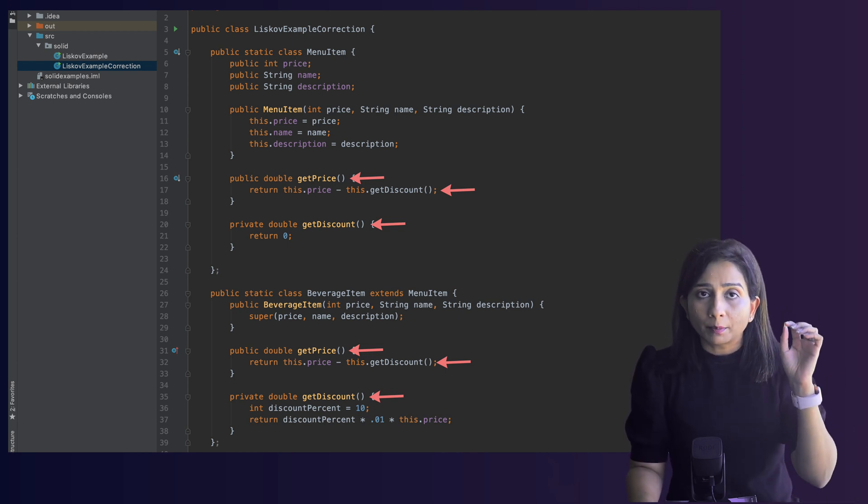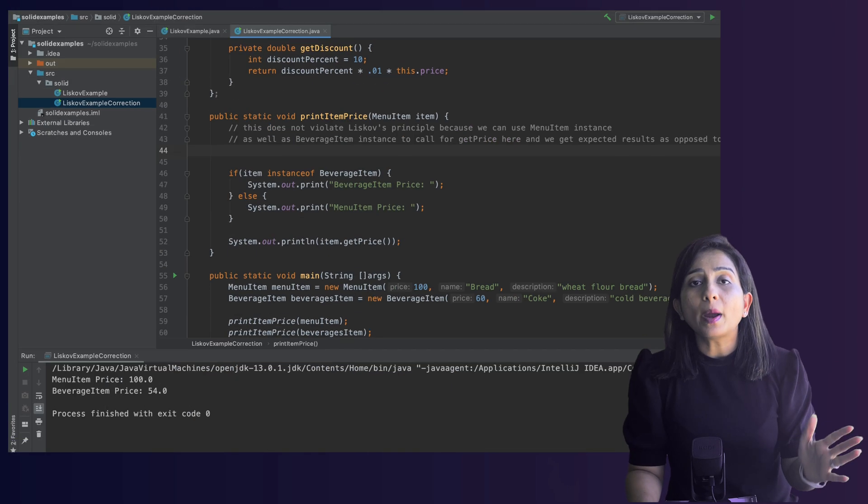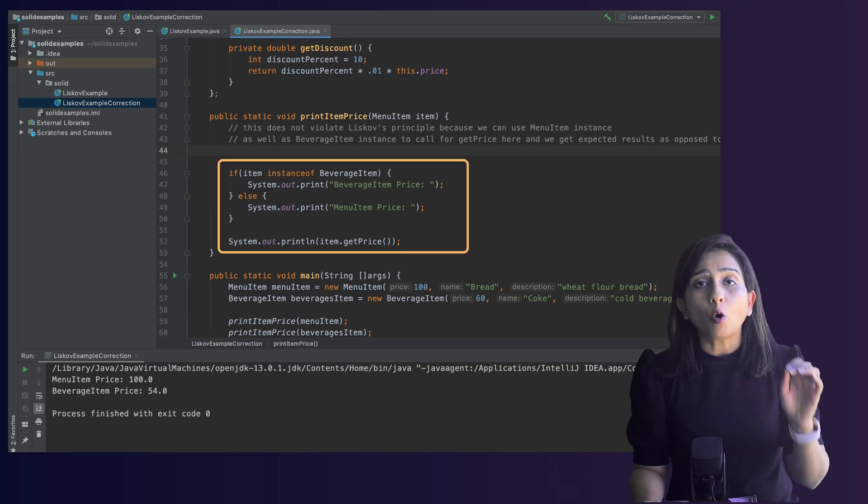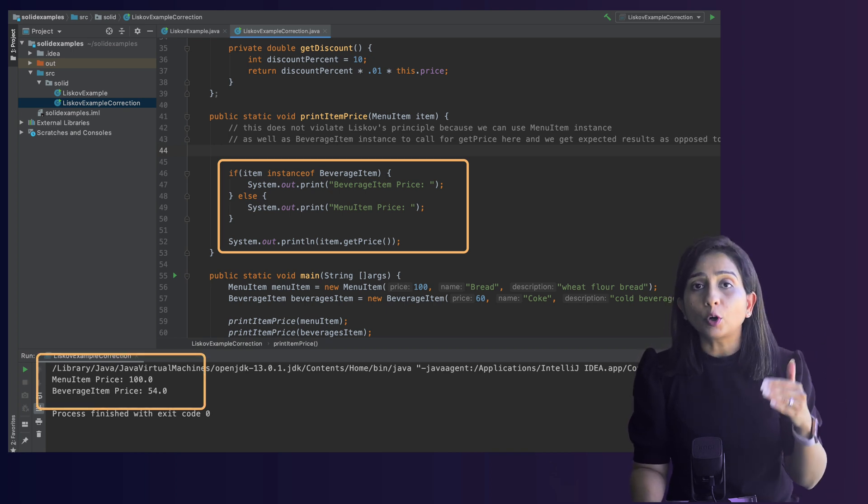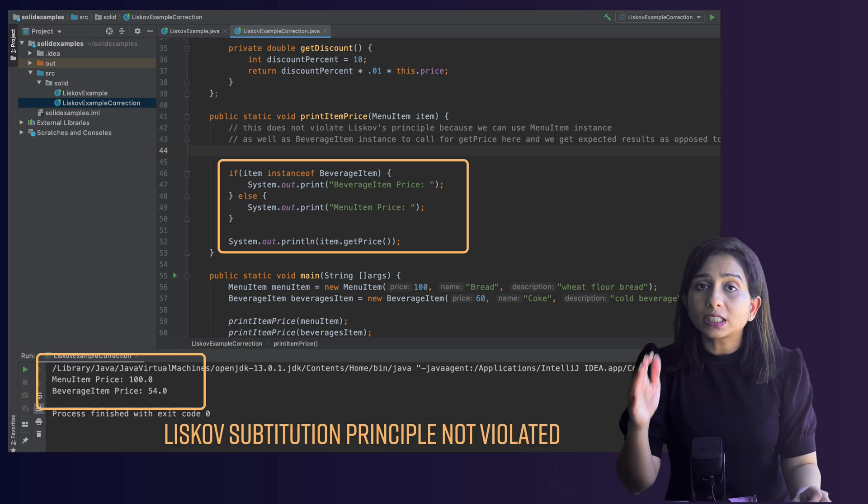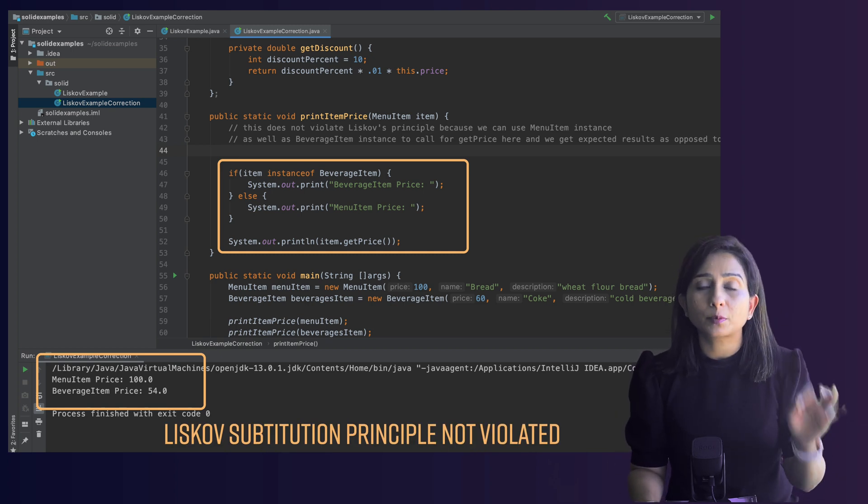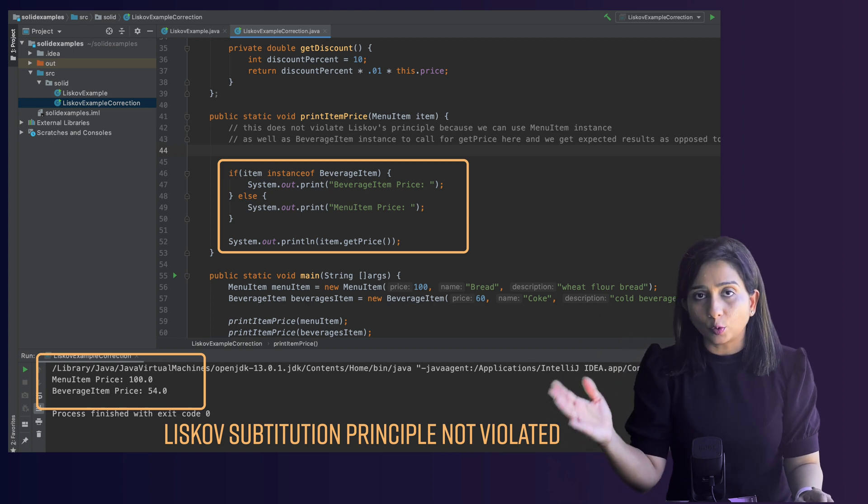Now MenuItem has getPrice which calls internally applyDiscount, BeverageItem has function getPrice which internally calls getDiscount. So no matter you call getPrice on the instance of BeverageItem or you call getPrice on the instance of MenuItem you will get the corresponding discount that any of the item provides or not provides, or basically you get the respective discount if it has been applied on any of the items. So this is how you correctly follow the Liskov Substitution Principle where you don't have to change the client code.